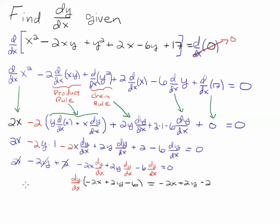And then I factor out the dy/dx, and I'm simply left with that term, and then I divide by minus 2x plus 2y minus 6, and I've now solved for dy/dx. All right, good luck.